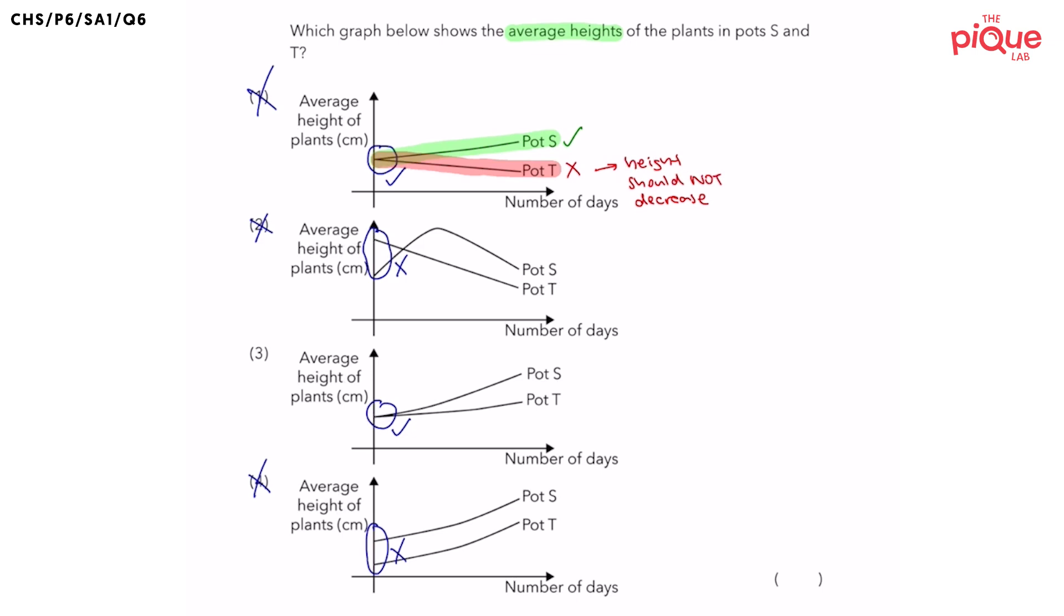So now we are just left with option three. And let's look at why this should be the correct answer. So if we look at the average height of plants in pots S, is it increasing? Yes.